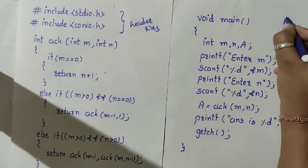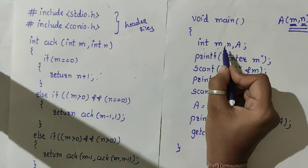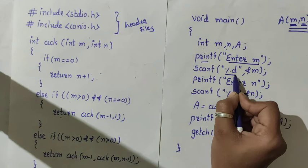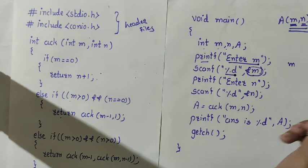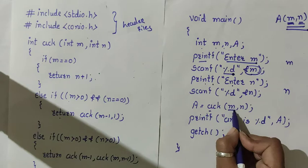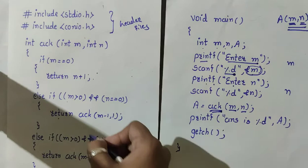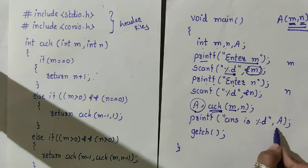In the main function, to find a(m,n) I need values m and n from the user. I declare integers m, n, and a. I use printf to prompt the user to enter m and scanf to read it, then prompt and read n similarly. Then I pass both values m and n as actual parameters to the ACK function and store the result in a.